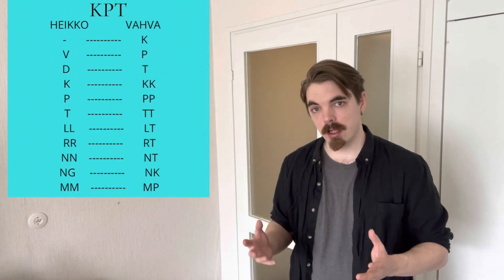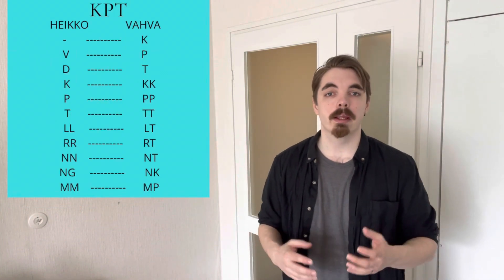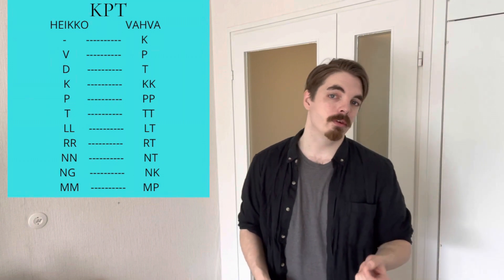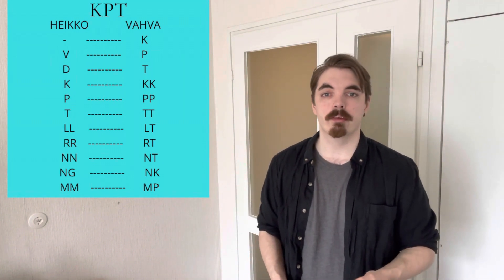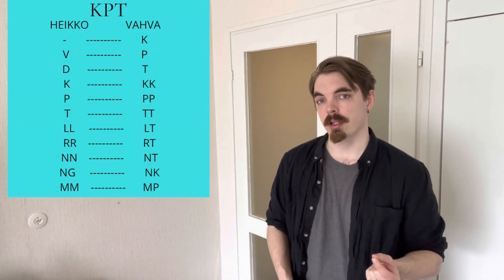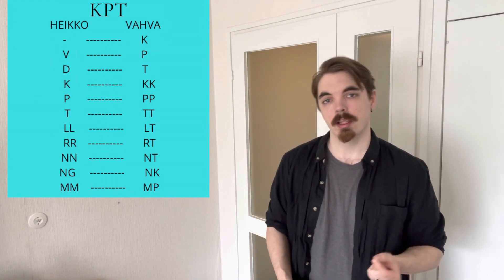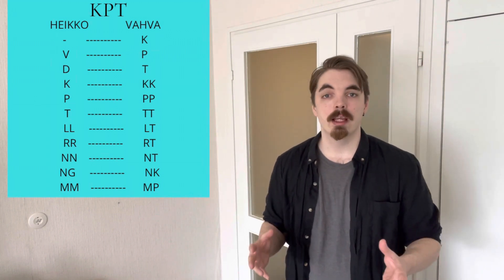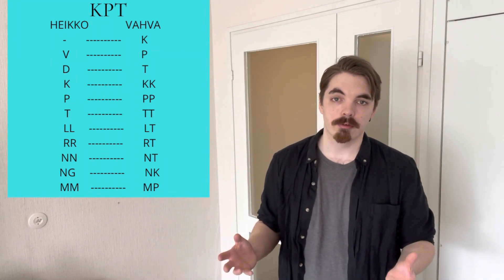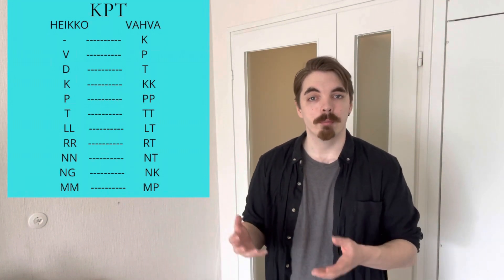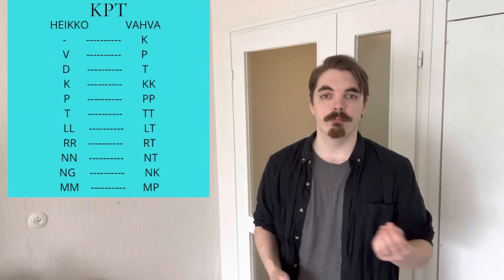In verb type 5, just like in verb type 2, we don't need to apply consonant gradation. I'm not going to talk about verb type 6 today — it will get its own video — but if you already know how type 6 conjugates, we change from weak to strong, just as in verb types 3 and 4.